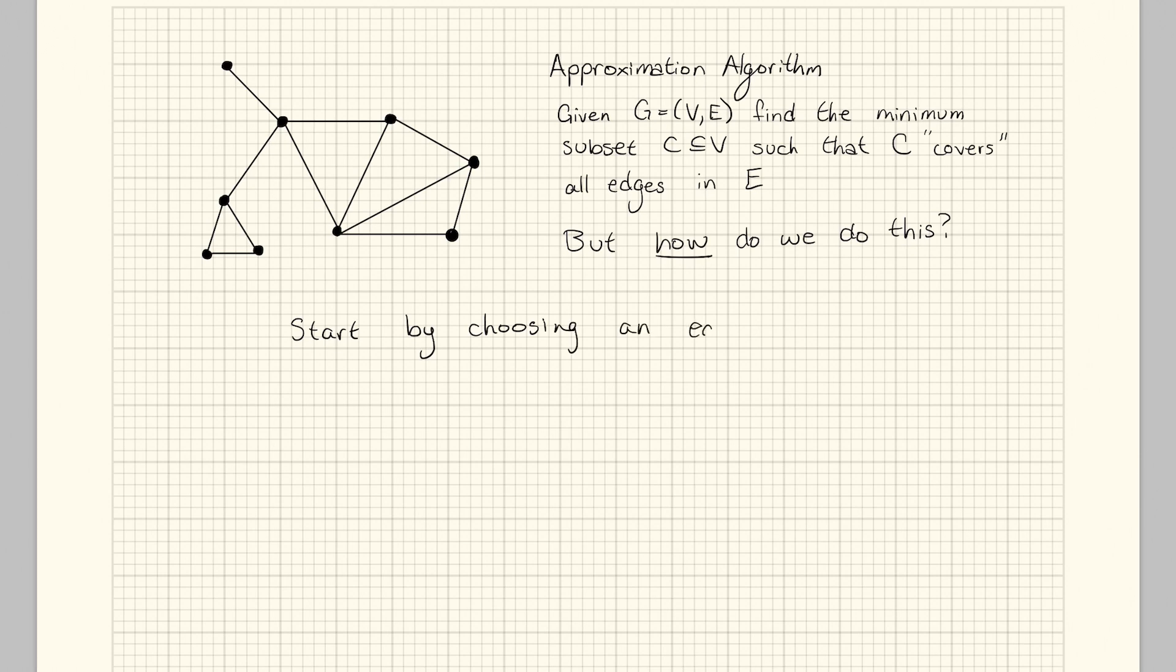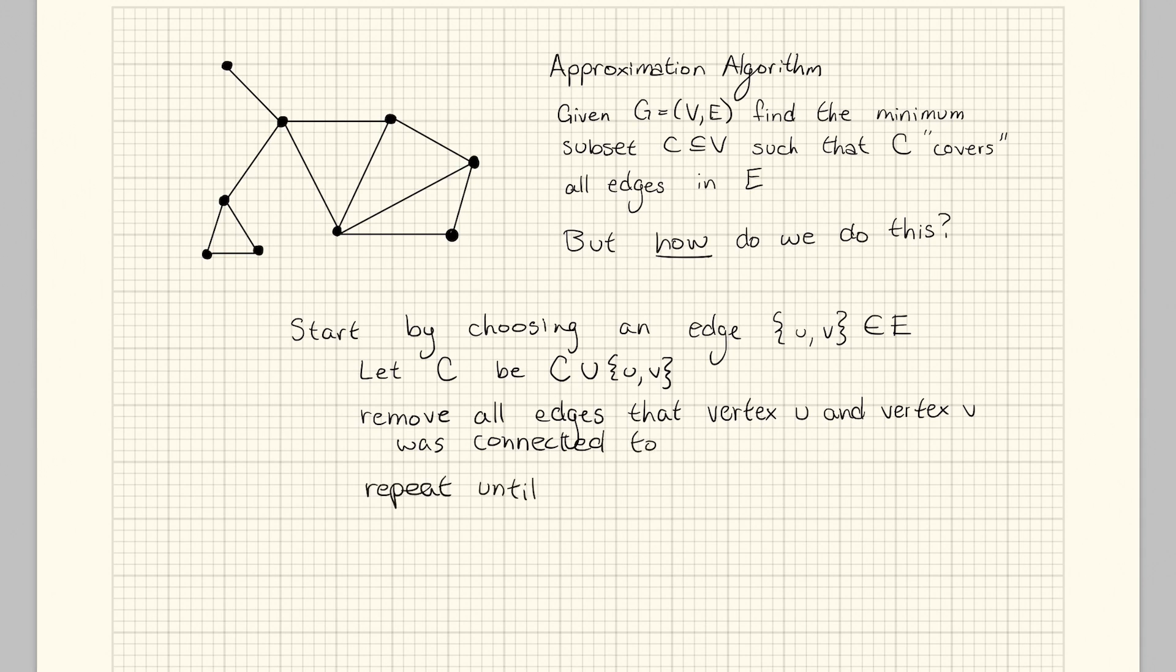So our approximation algorithm is going to be, start by choosing an edge, Uv, that is contained within the edges of the graph. Let our cover C be what already exists in the cover union those two new vertices. Now we're going to remove all edges that the vertex U and the vertex V touch and repeat this algorithm until all edges are gone.